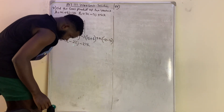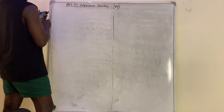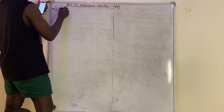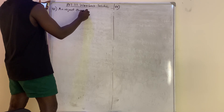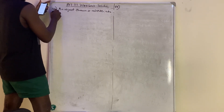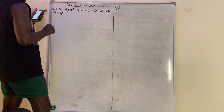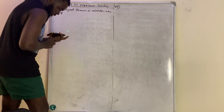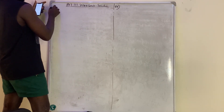So that is that. Moving to question number 82: an object thrown or released into space that travels along a curved path is called projectile motion. No need to write that. Moving to question number 83.